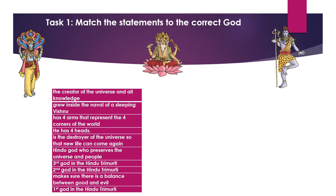Your task today is to match the statements to the correct deity within the god Brahman. We've got: the creator of the universe and all knowledge — match that to the correct god; grew inside the navel of a sleeping Vishnu — which god is that? Please write the statements, write the name of each deity, and pop the statements underneath. Or go back onto Teams where you can move them around. That is task number one.